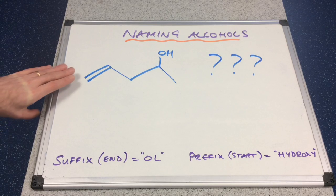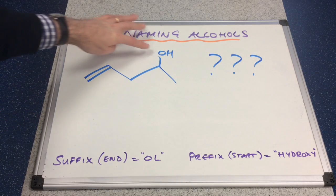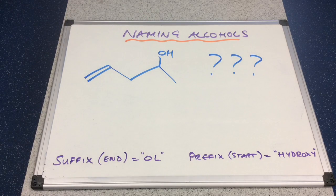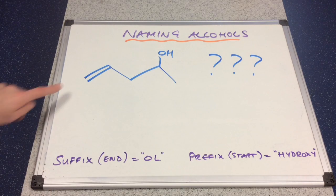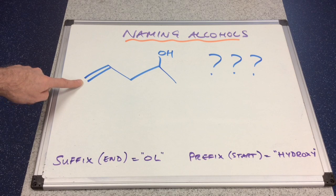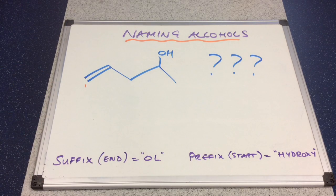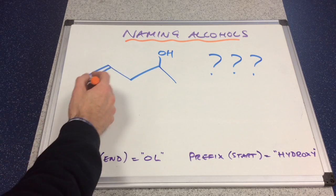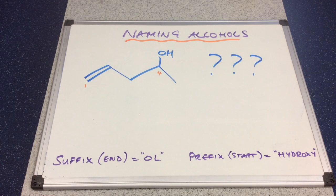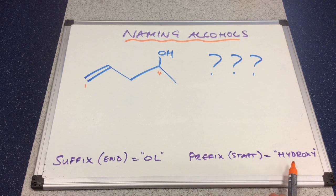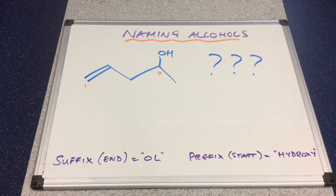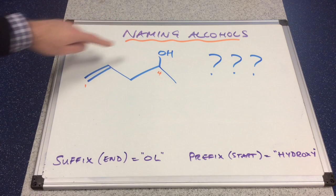Let's assume this is an alkene with an OH branch. The longest continuous chain is one, two, three, four, five long, so it's pent-. We're assuming the alkene is the most important functional group. The OH group is on carbon number four, so because we've decided this is an alkene, we have to use the prefix for alcohols, which is hydroxy. So following that system, we'd call this 4-hydroxy-pent-1-ene.